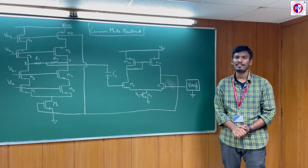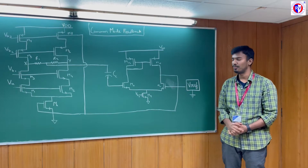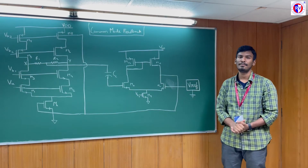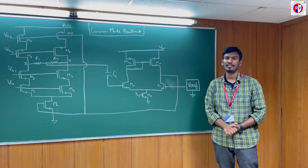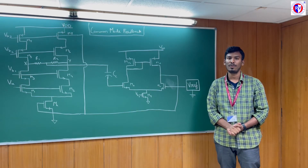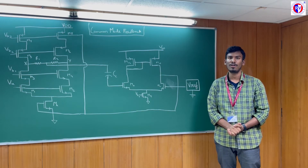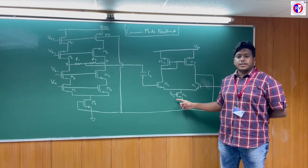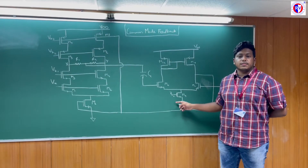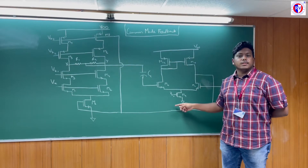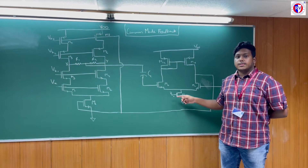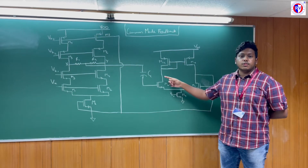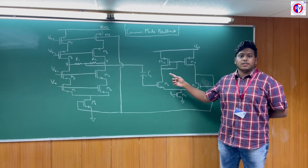Hi, I am constant reference voltage source, typically designed using DGR. In common mode feedback operation, I provide a voltage equal to the desired output common mode voltage. Hi, I am an ideal current source in this circuit. I determine the total current flowing in this circuit. I am a perfect current source here, so hence I do not give rise to output common mode gain in this circuit.